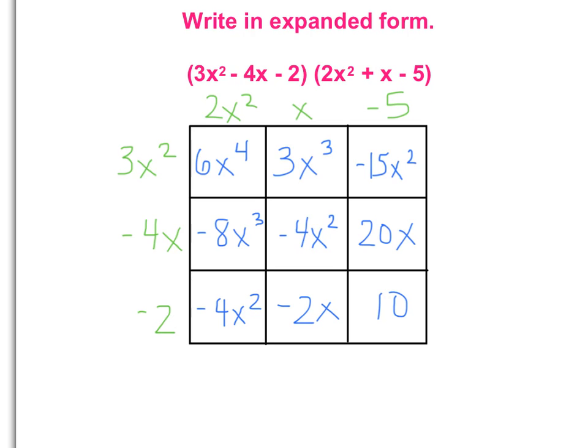So here it is with the box method expanded out. One thing that I want you to check to see if you did right is if you use the signs from here, the negative 4x and the negative 2, and you put them here in front of the numbers here. This is a common mistake that people often forget, the sign in front of the number.